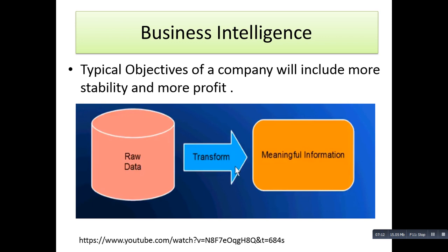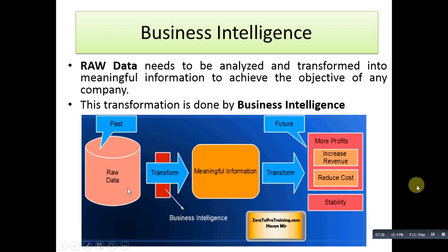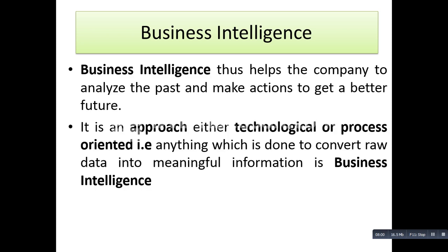The typical objective of a company includes more stability and more profit. To achieve this, raw data needs to be analyzed and transformed into meaningful information. This transformation is done by business intelligence, so that in the future you get more profit, increased revenue, reduced cost, and stability. Business intelligence is an approach — either technological or process-oriented — that converts raw data into meaningful information.